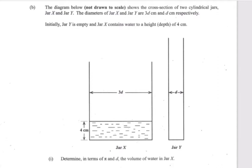The diagram below, not drawn to scale, shows a cross section of two cylindrical jars, jar X and jar Y. The diameters of jar X and jar Y are 3d centimeters and d centimeters respectively. Initially, jar Y is empty and jar X contains water to a height of four centimeters.